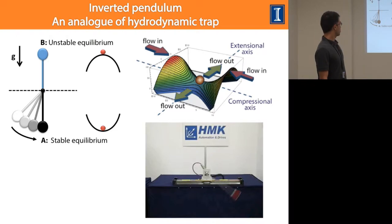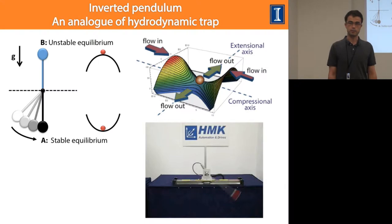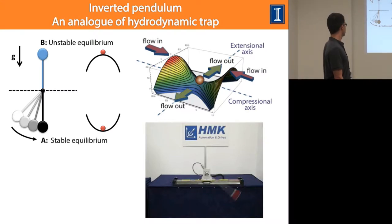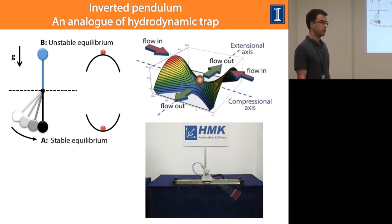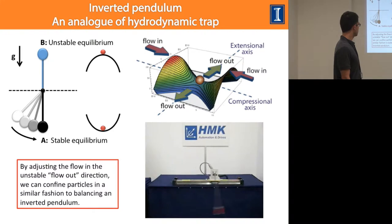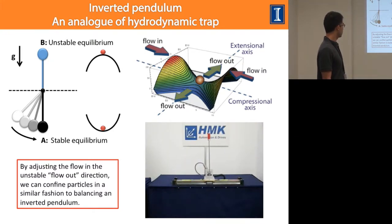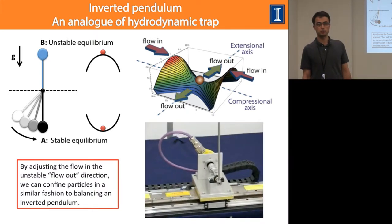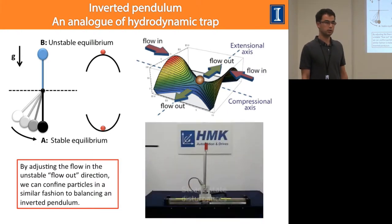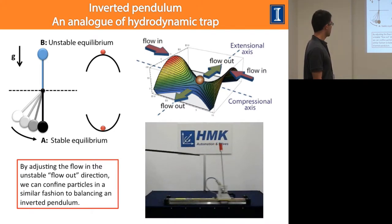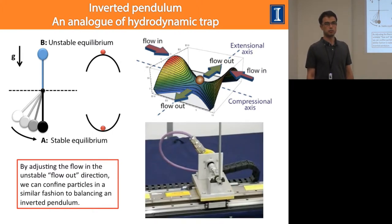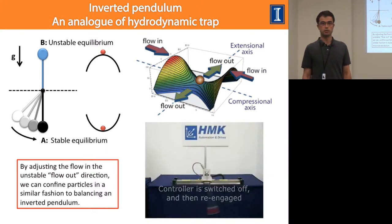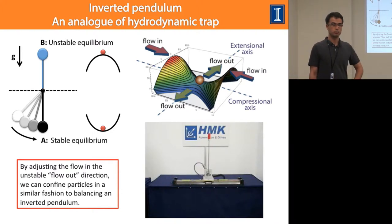Drawing the analogy: along the flow-in direction we have stable equilibrium, and along the flow-out direction we have unstable equilibrium. However, it is possible to make the unstable equilibrium stable by applying controls. The movie on the bottom right shows this for an inverted pendulum — if a robot manipulates the base position of the pendulum, the inverted pendulum can be made stable. This is what we do with our system. If the particle is destabilized by Brownian motion and moves out of the trap center, we manipulate the flow along the unstable direction to return it to the trap center.